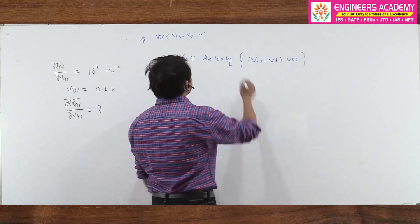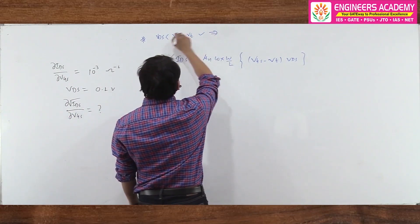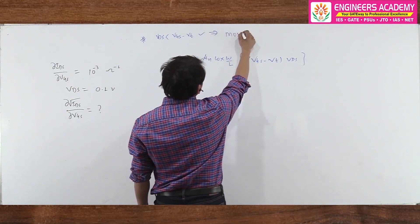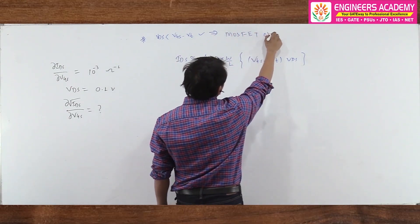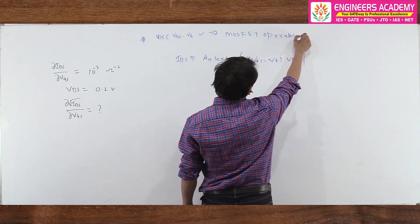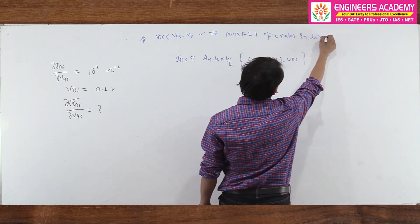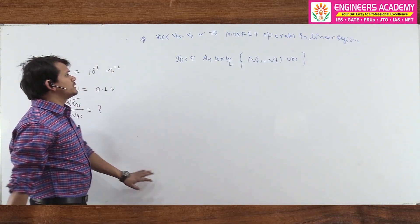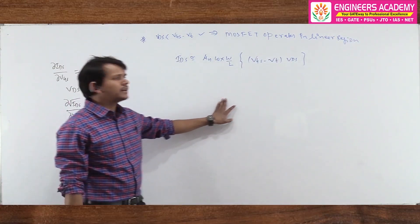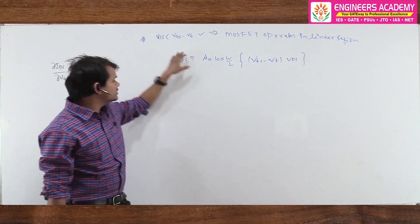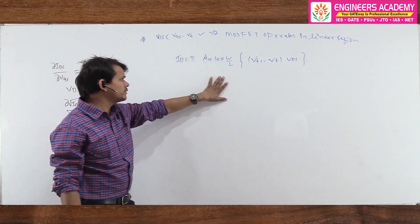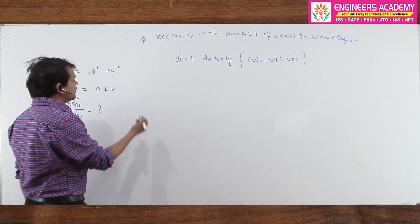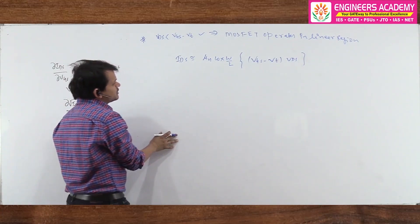So when Vds < (Vgs − Vt), the MOSFET operates in the linear region, and IDS = μn·Cox·(W/L)·(Vgs − Vt)·Vds. Now, given what we need, let's differentiate this expression with respect to Vgs.